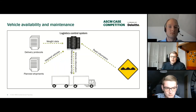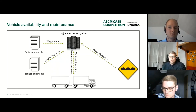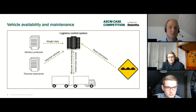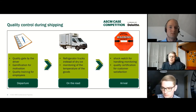After the deliveries are planned, the system can determine the required vehicles. If there are not enough vehicles available, they can be rented at short notice based on this information. But not only the vehicle must always be in good condition — the product should also arrive perfectly at the customer. To make this possible, quality management is introduced for the complete shipping process.